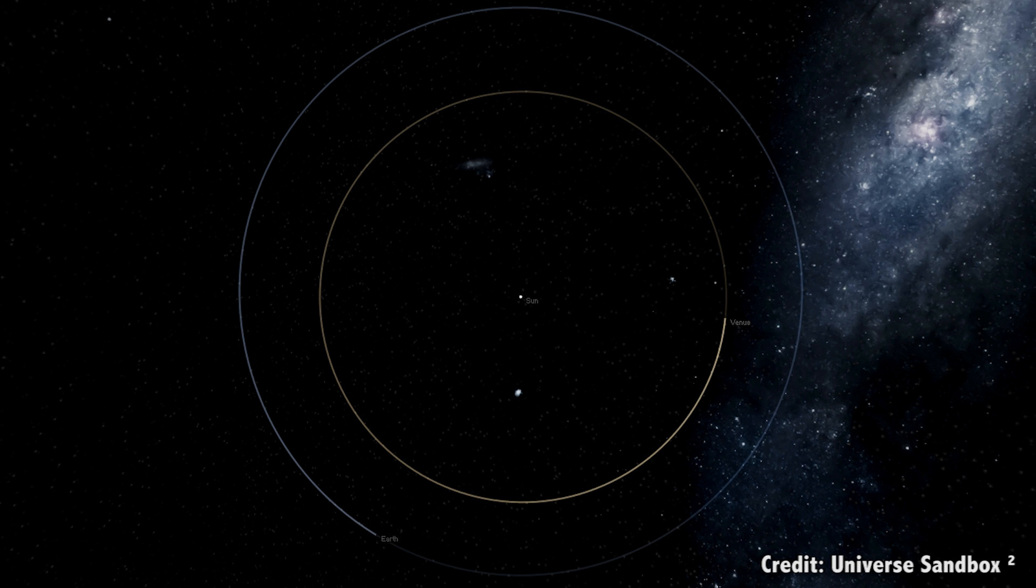while Venus only takes 225 days to complete an orbit. Which means that Venus completes more than 3 orbits every time Earth completes 2. Which means that we're always seeing Venus from different angles compared to the Sun.